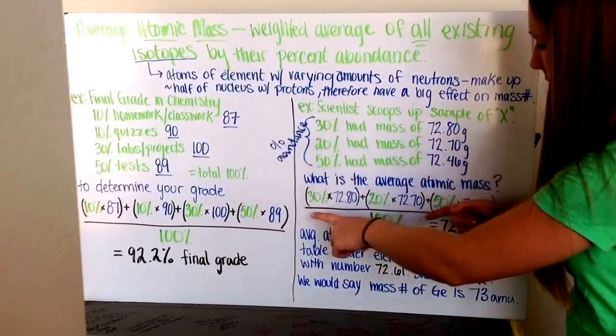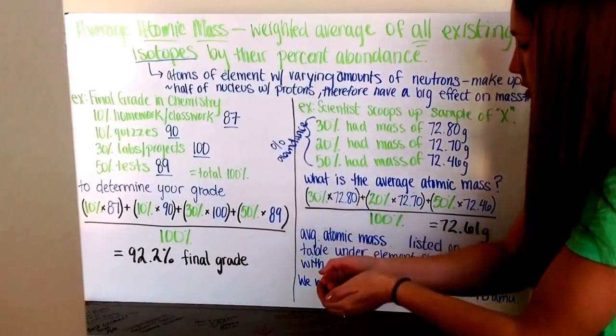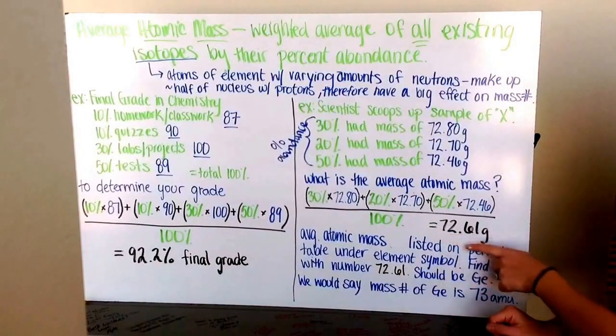Take how many you have, multiply by how much they weigh, add them up, and divide by the total of 100. This gives you 72.61 grams.